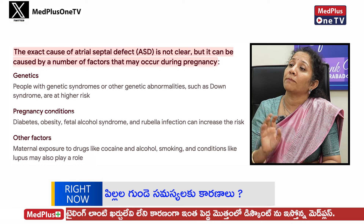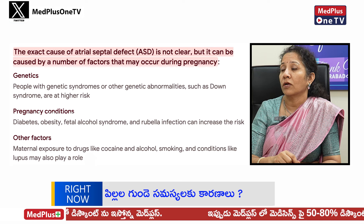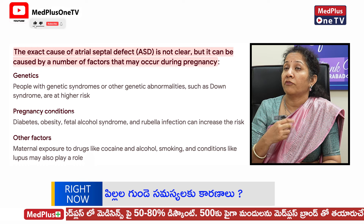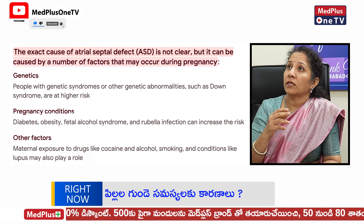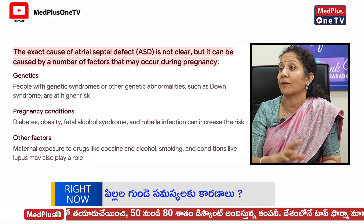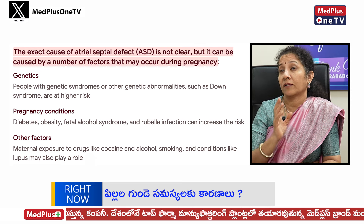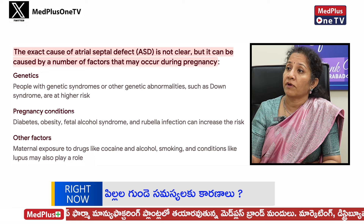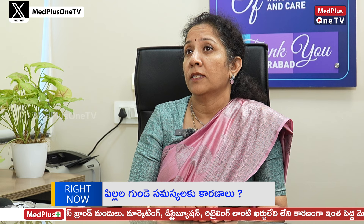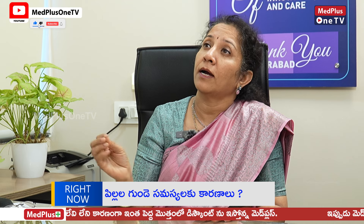Medications taken during pregnancy can cause heart defects — including medicines for blood pressure, depression, and seizures. Unless prescribed, medications should be avoided during pregnancy planning. Active smoking by the mother, passive smoking from the father, alcohol consumption, and environmental pollution are also linked to heart defects.